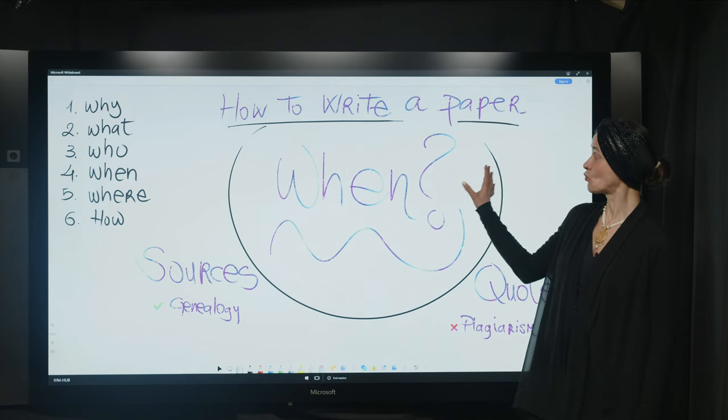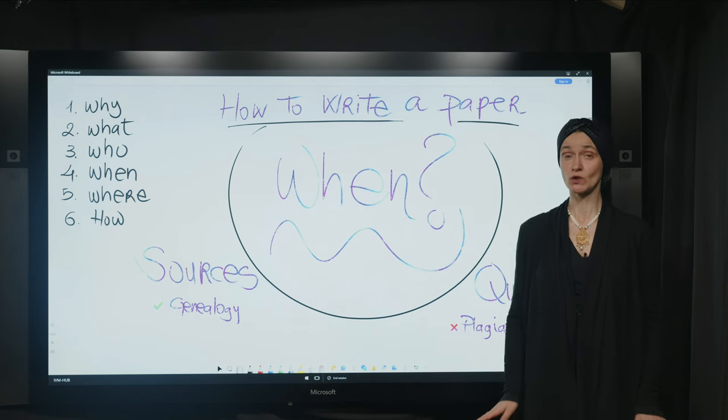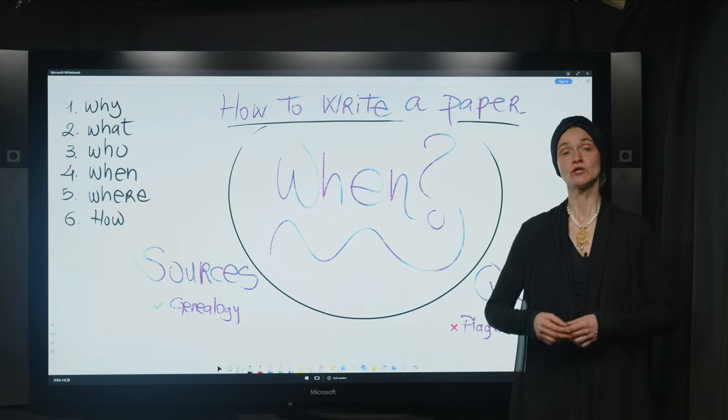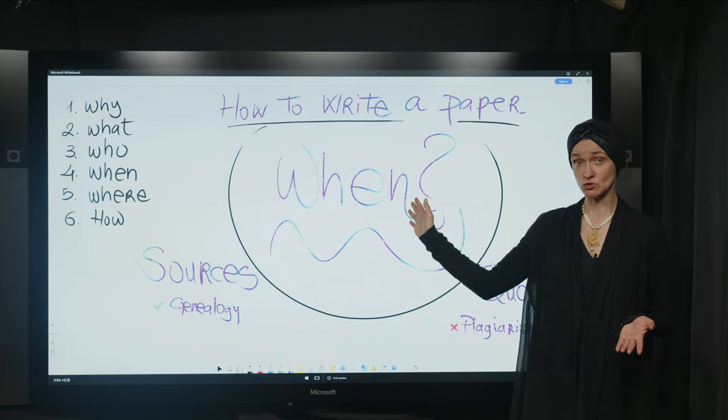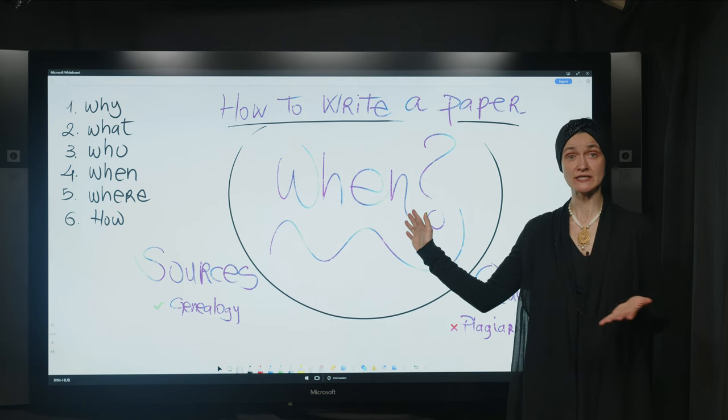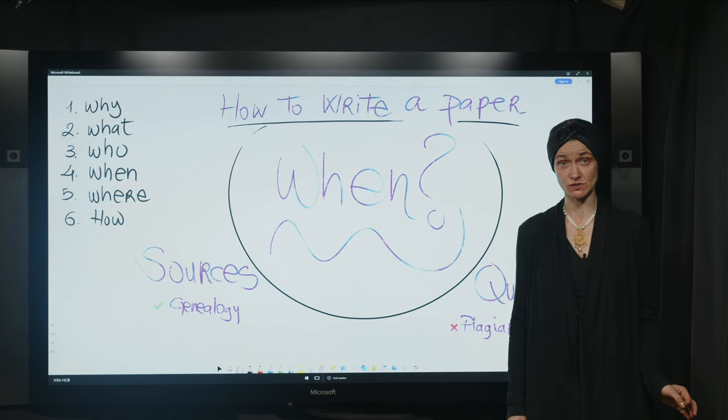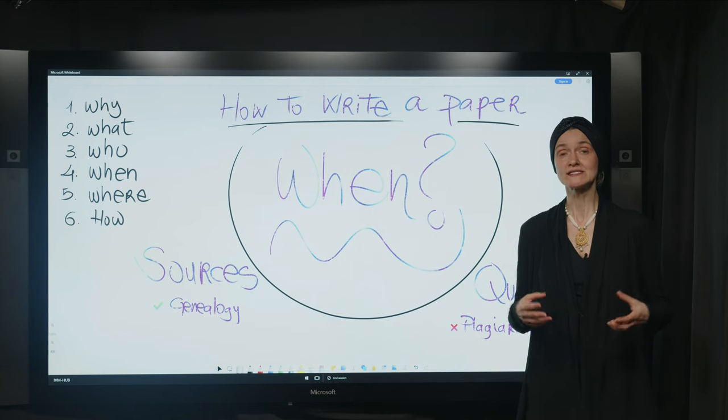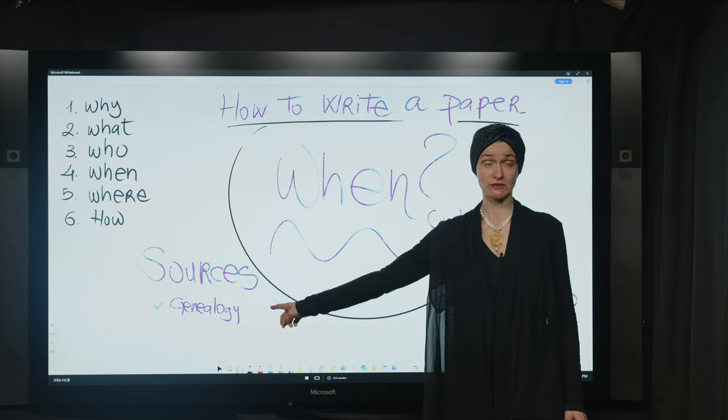So in this video, we are going to underline the importance of rooting your argument. Whatever is your field, whatever is your argument, you need to show that you are coming from somewhere, that you are not coming from nowhere. This is not Zen poetry, which is an amazing, beautiful field. I love koans. But we are talking today about specifically academic papers. And how to make sure that the people reading you understand which one is your genealogy. This is fundamental.